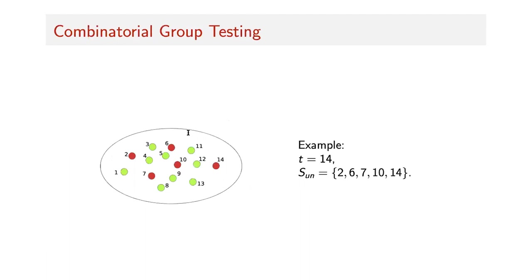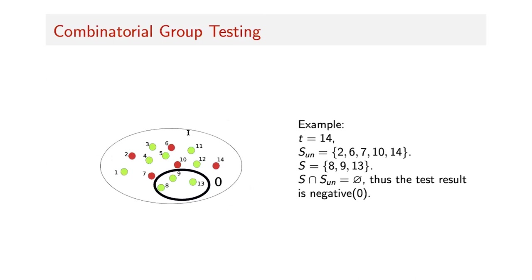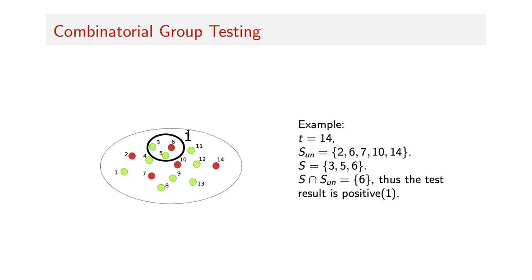For example, in this picture we have 14 coins, five of which are fake — painted red. We can test, for example, these three coins. All of them are good, so the test result is negative, zero. And for this other test, we have one fake coin, so the test result is positive. We want to use the minimum number of such tests to find all fake coins.